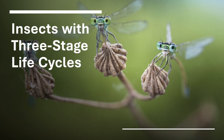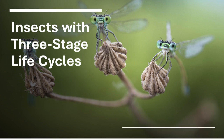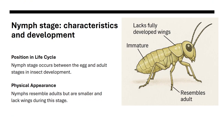Now let's focus on insects that have three-stage life cycles, which include a nymph stage. The nymph stage comes between the egg and adult stages. Nymphs look similar to adults but are smaller and do not have wings.